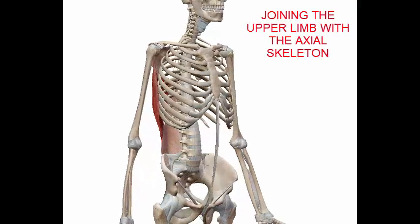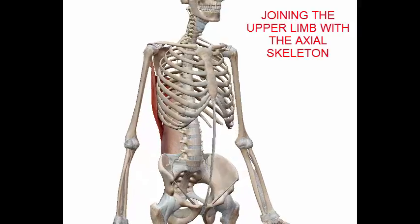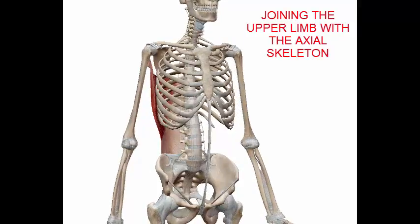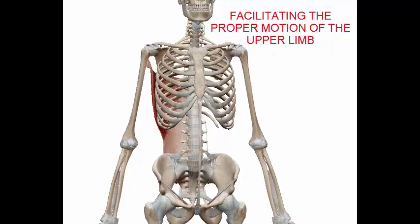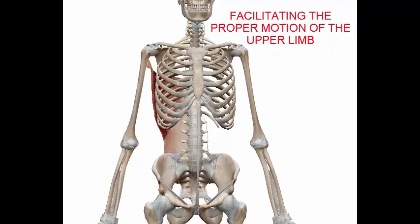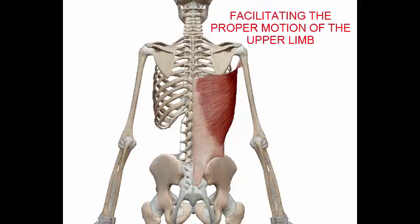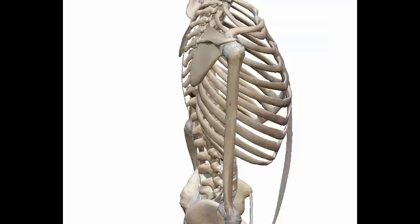The function of the latissimus dorsi includes joining the upper limb with the axial skeleton and facilitating the proper motion of the upper limb.